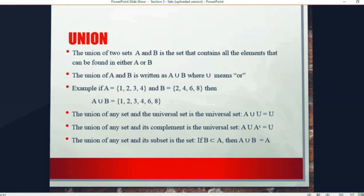So you list out all the elements in A, which is 1, 2, 3, 4. And you're going to list out all the elements in B, that is 2, 4, 6, 8. We already have the 2 and the 4. So all we need to add in to get A union B is the 6 and the 8.